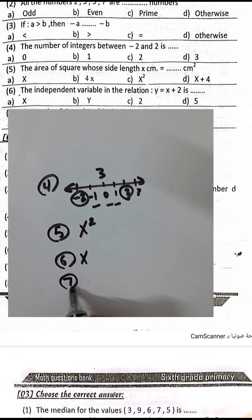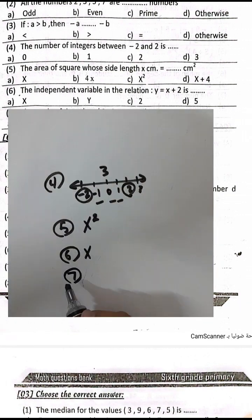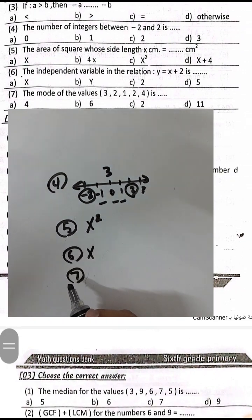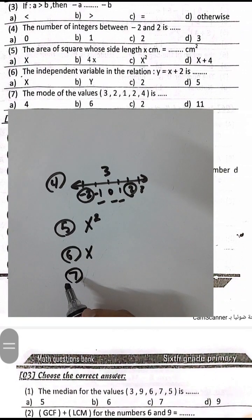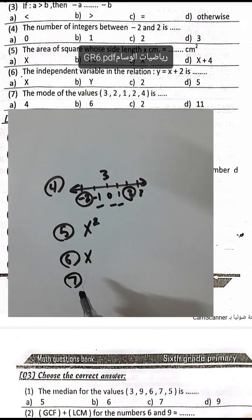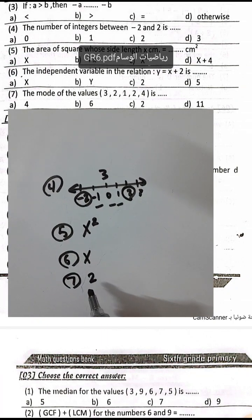Question 7: The mode of the values is the number that repeats the most. The answer is 2.